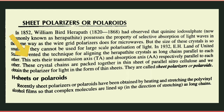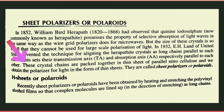This sets their transmission axis (TA) and absorption axis (AA) respectively parallel to each other. Us mein kya hota hai — jo transmission axis hota hai aur jo absorption axis hota hai, wo ek dousri se parallel hoti hai. These crystal chains are packed together in a thin sheet of parallel nitrocellulose and we obtain the polarizer for light in the form of thin sheets, and these are called sheet polarizers or polarites.